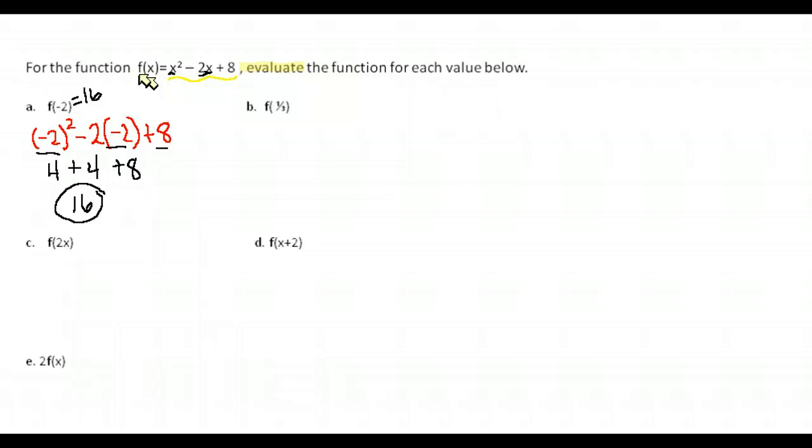Let's try this next example. f of one third. A lot of people are a little afraid of fractions. I put a fraction example on here. But we do exactly the same thing. Our function is still x squared minus 2x plus 8. And so we just replace the x's with one third this time. So we'd have one third squared minus 2 times one third plus 8.